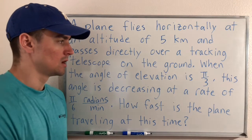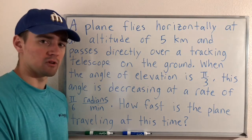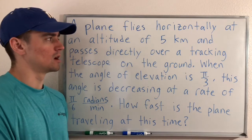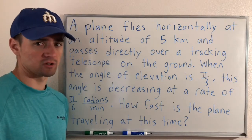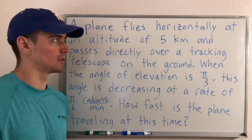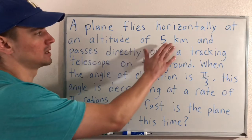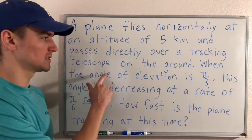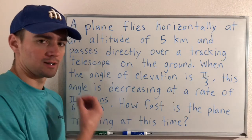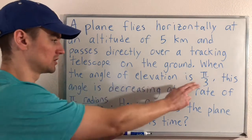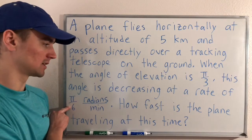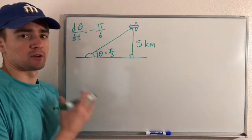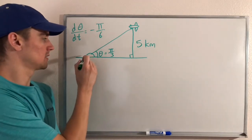How fast is the plane traveling at this time? Just like any other related rates problem, we're going to follow the same four-step process. The first step is to draw a sketch of what you're dealing with. Let's think about the information we have first, and then draw what that looks like. The plane is five kilometers above the ground, flying horizontally, and flies over this telescope. We know the angle of elevation is pi over three and it's decreasing at a rate of pi over six radians per minute.